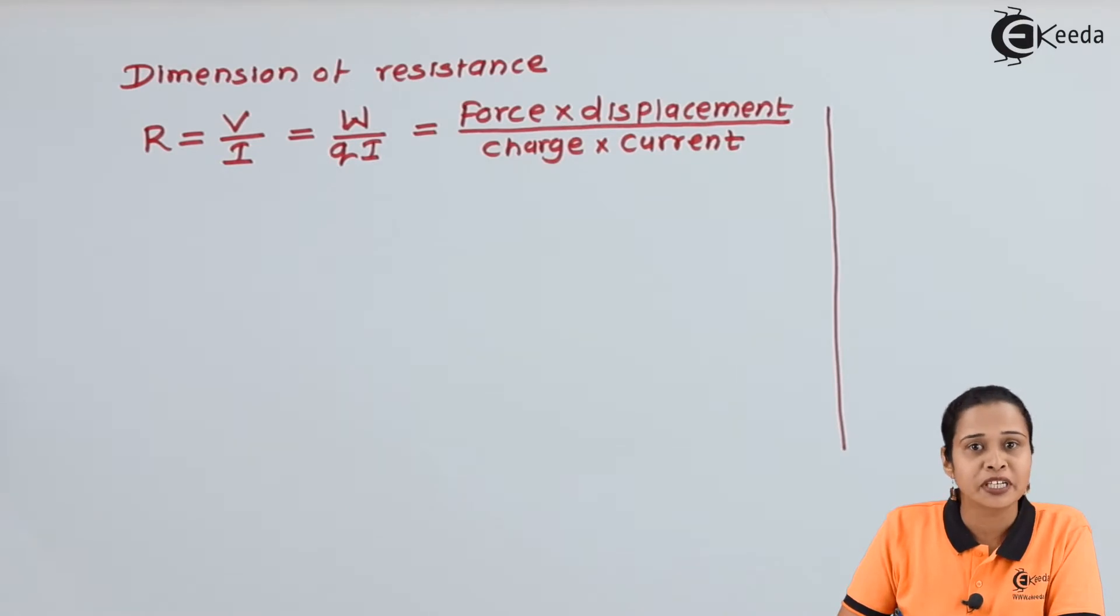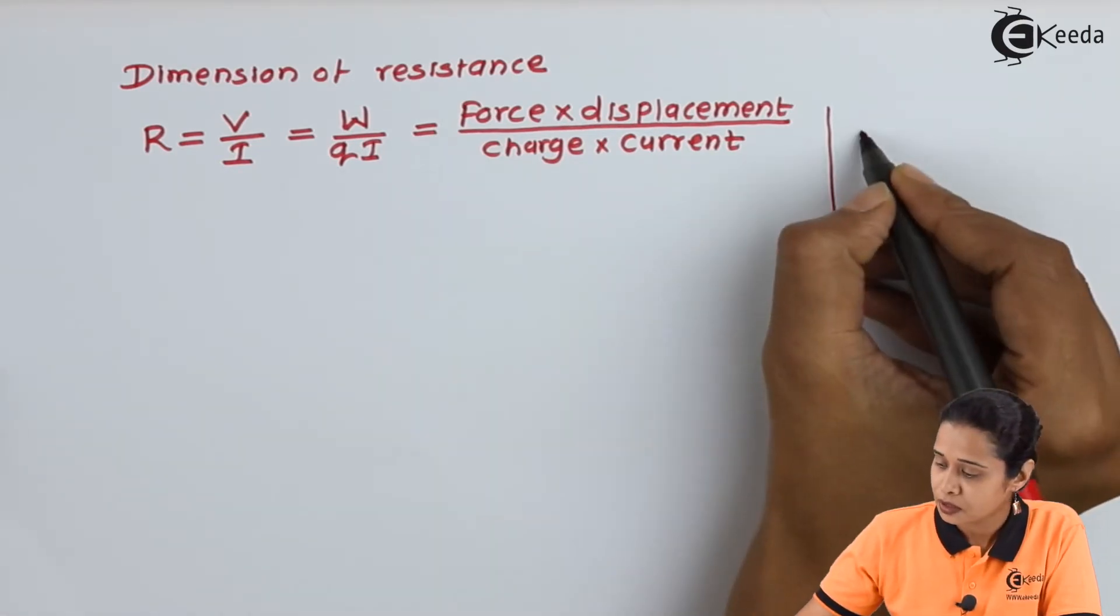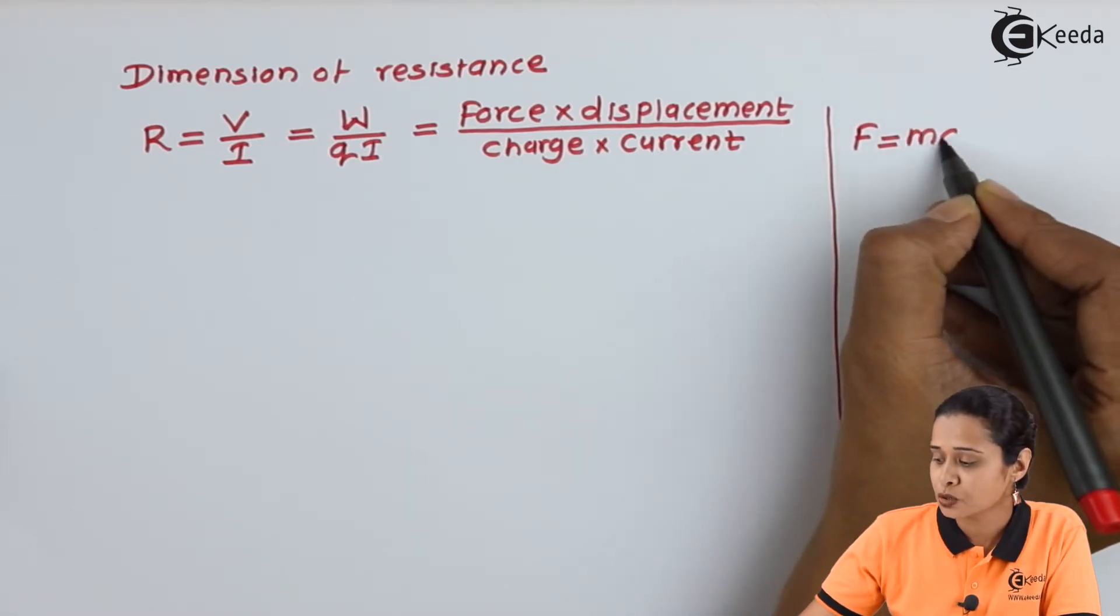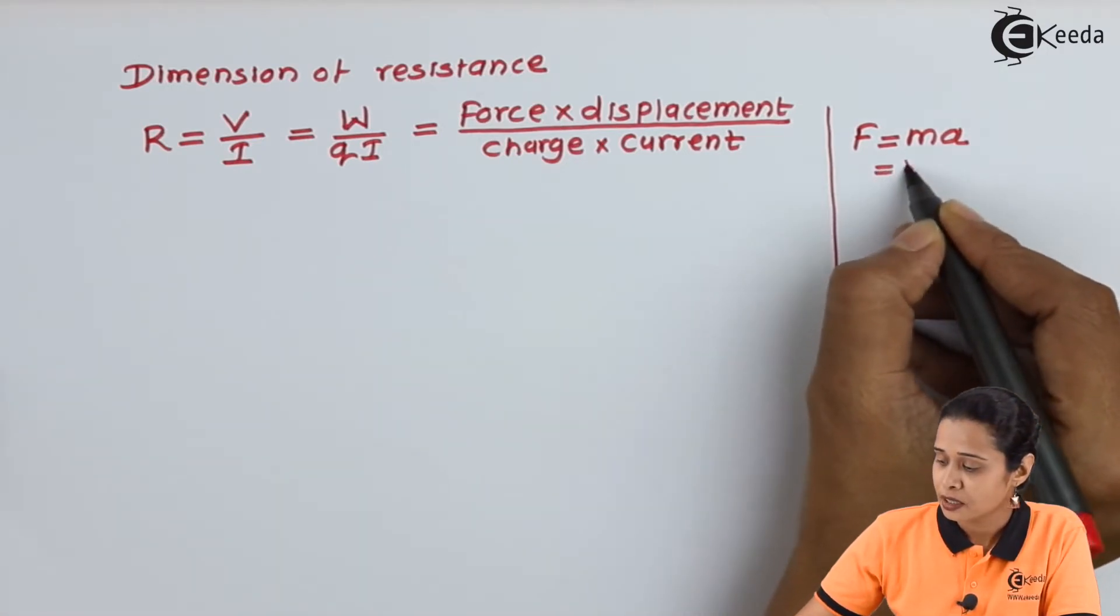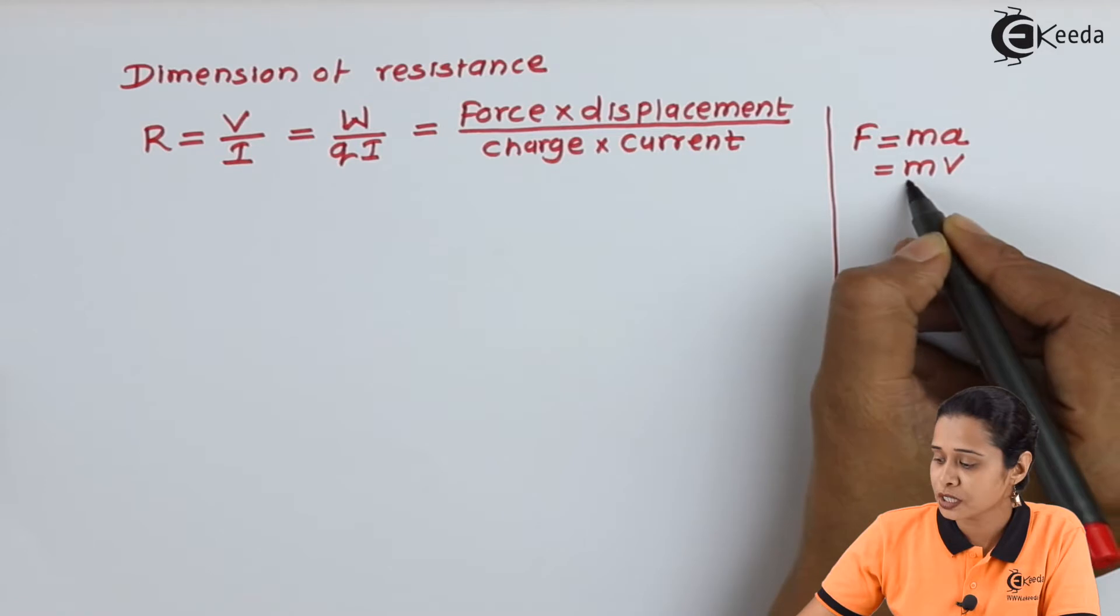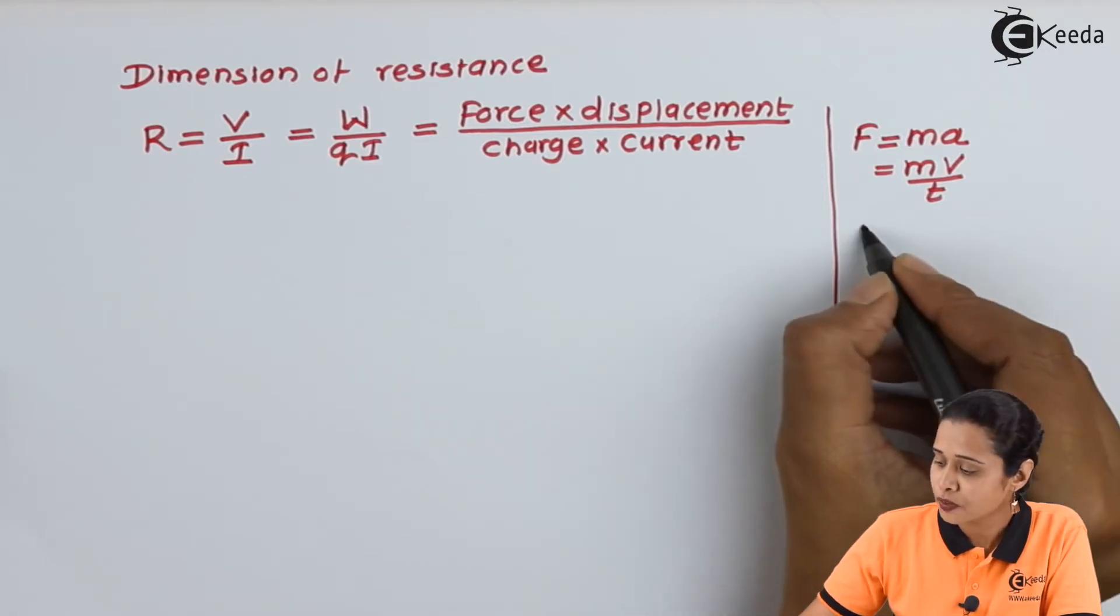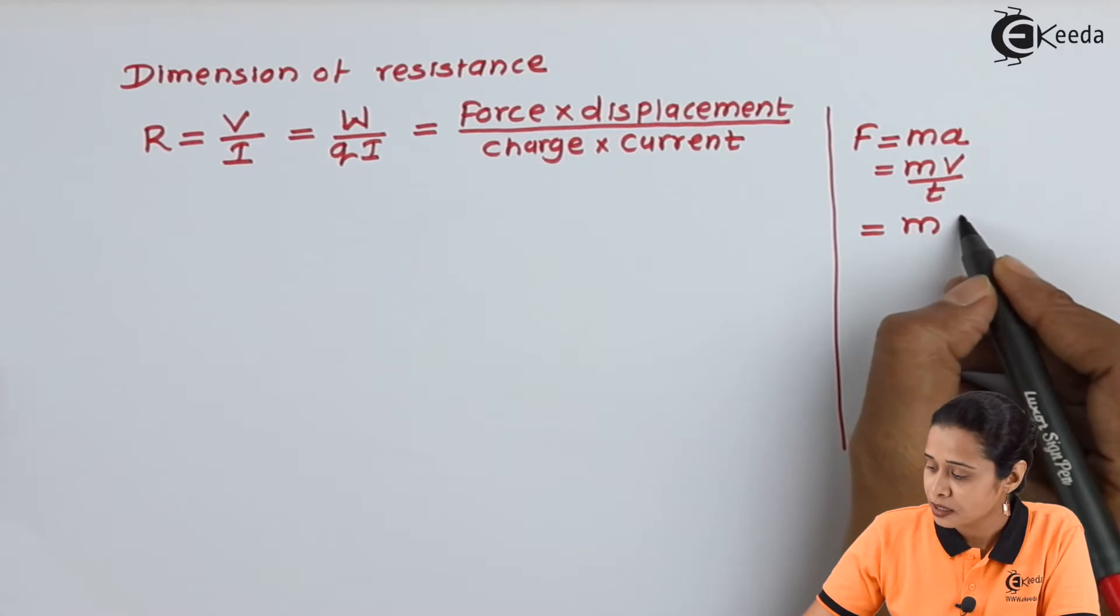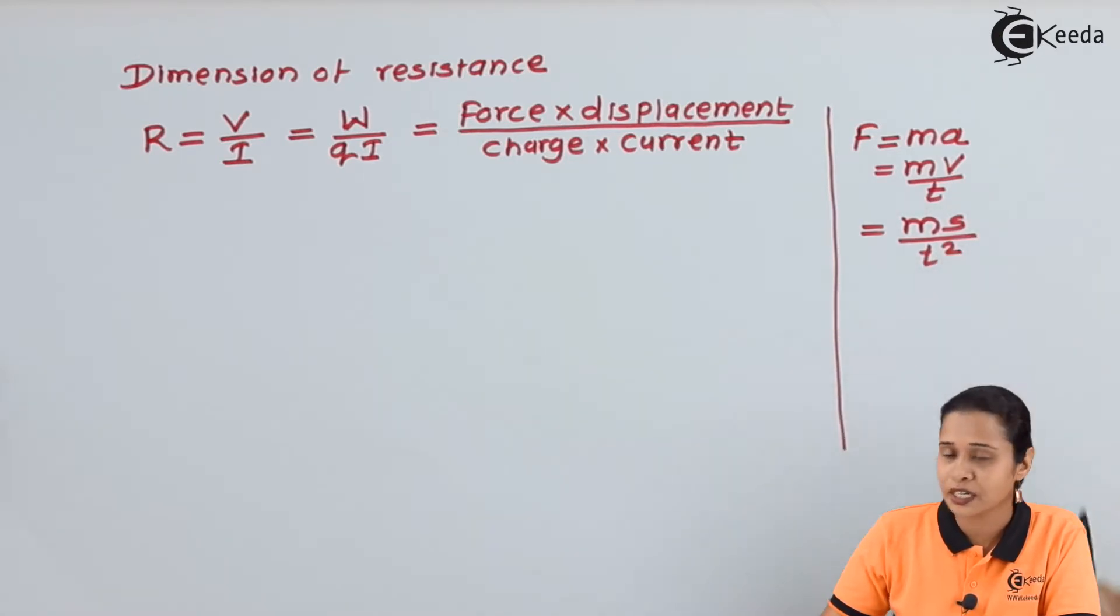Let us find out the dimension of these quantities. We have force. We know force equals mass times acceleration. We can write this as mass times velocity per unit time. Now, velocity can be expressed as distance per unit time. So, we will write distance S per unit time, and since this time is there, we will write T squared.